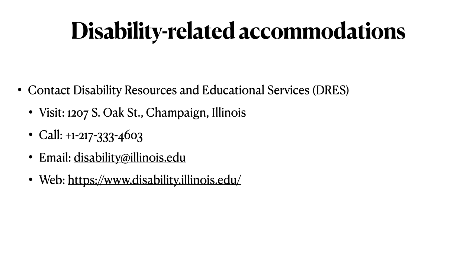To contact DREZ, you may visit 1207 South Oak Street, Champaign, Illinois. You may call 217-333-4603. You may email disability@illinois.edu. Or you may go to the DREZ website at www.disability.illinois.edu.